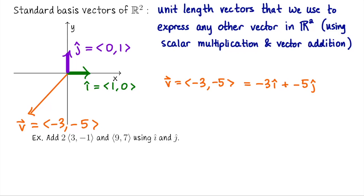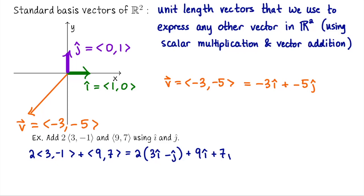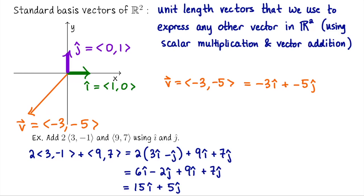Let me take 2 times the vector 3, negative 1 and add to it the vector 9, 7 using the i, j notation. So 2 times 3i minus j plus 9i plus 7j. Distributing the 2 gives 6i minus 2j plus 9i plus 7j. Gathering like terms — i terms and j terms — gives 15i plus 5j. You can do vector operations using i and j notation by gathering i terms together and j terms together.